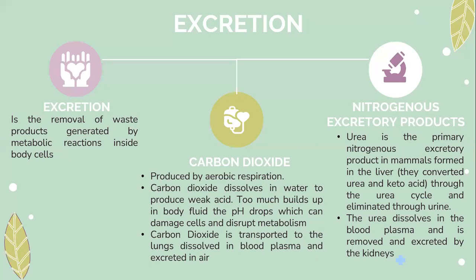Carbon dioxide is transported to the lungs, dissolved in the blood plasma, and excreted in air. Urea is the primary nitrogenous excretory product in mammals, formed in the liver. Amino acids are converted to urea and keto acids through the urea cycle and eliminated through urine. The urea is dissolved in the blood plasma and excreted by the kidneys.